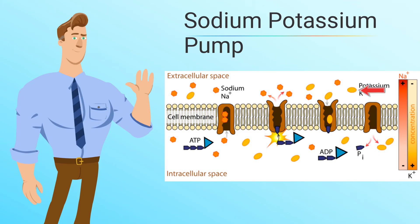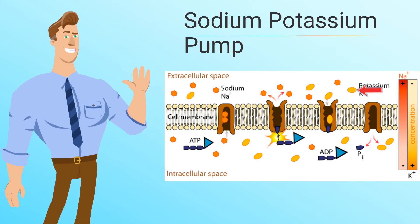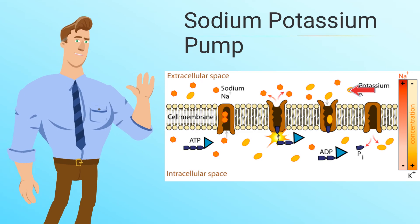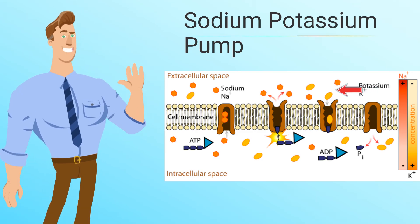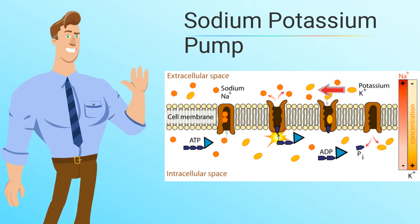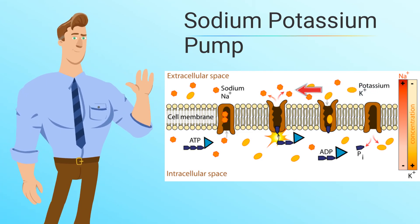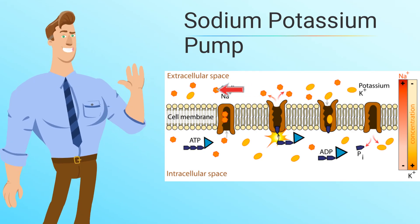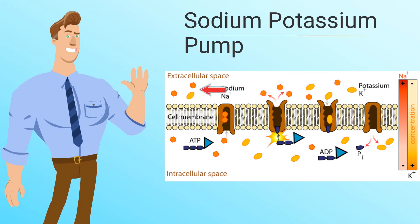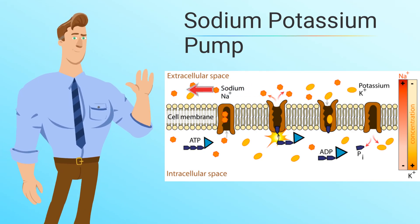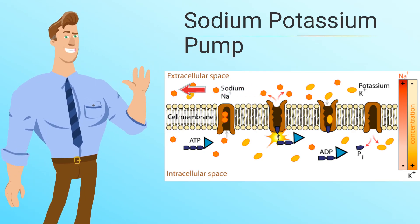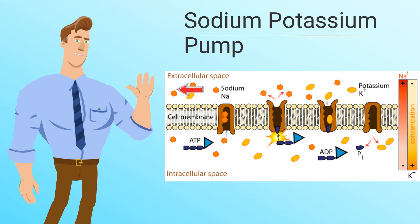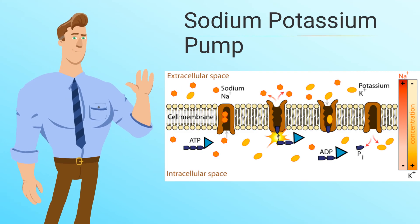Two potassium ions on the outside of the cell attach to the pump, the pump changes shape, and the potassium ions move inside the cell. They are going against the concentration gradient, or going from low to high concentration.